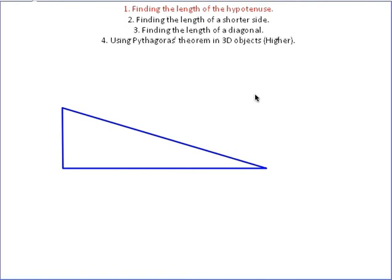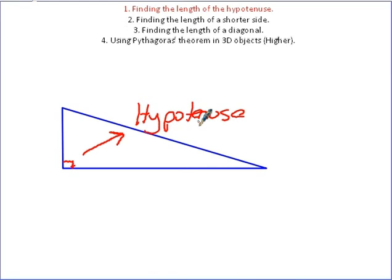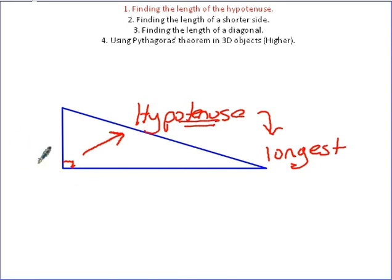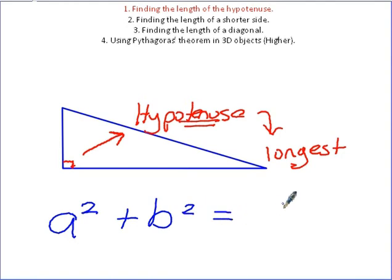To find the length of a hypotenuse, the first thing you need to know is that Pythagoras' Theorem only ever applies to a right-angled triangle, and that the side opposite the right angle is always the hypotenuse. Also, the hypotenuse is always the longest length, and we use the formula A squared plus B squared equals C squared to find the side.